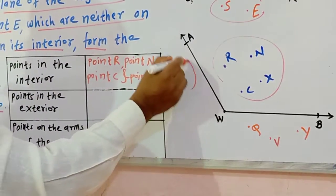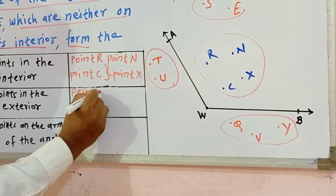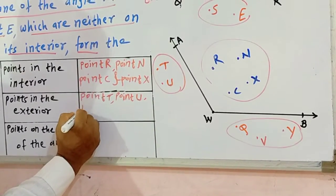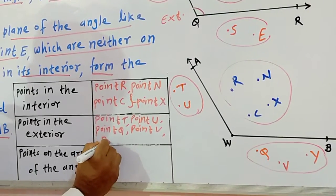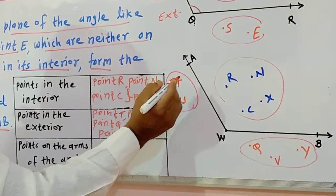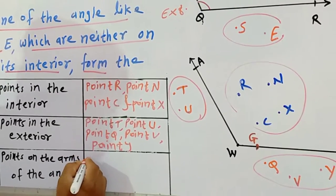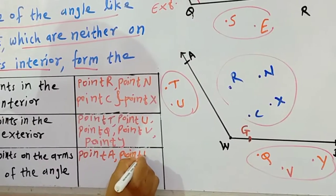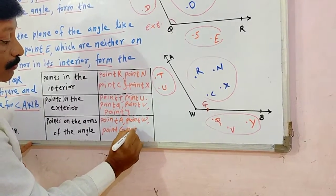Then, points in the exterior. Looking at the figure, there are two points here and three points there in the exterior. So write here: point T, point U, point Q, point B, and point Y. And last, points on the arms of the angle. See which points are on the arms: point A, point W, and point B. The points on the arms of the angle are point A, point W, and point G and point B.